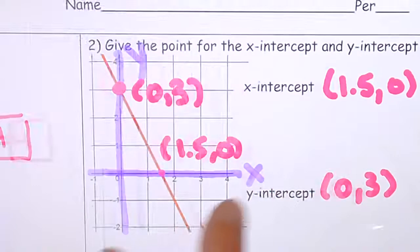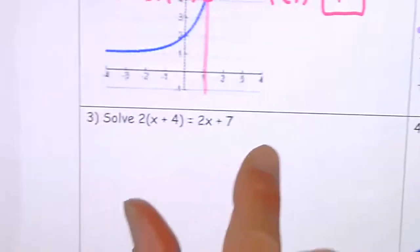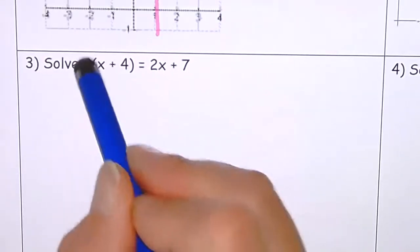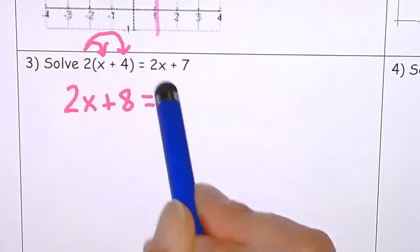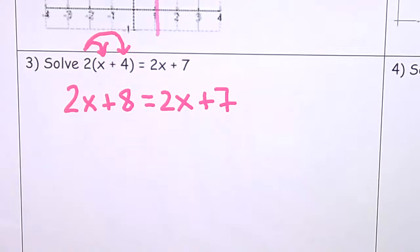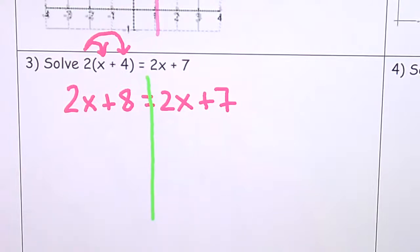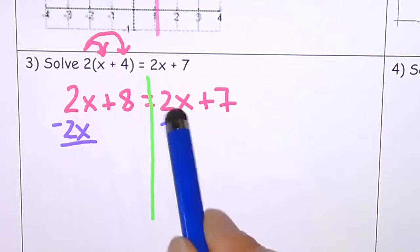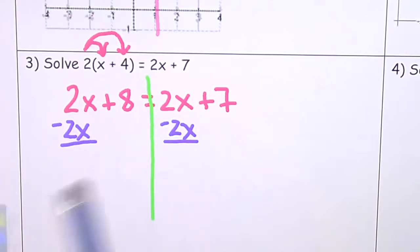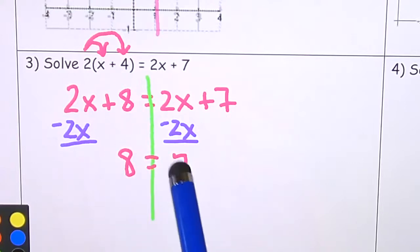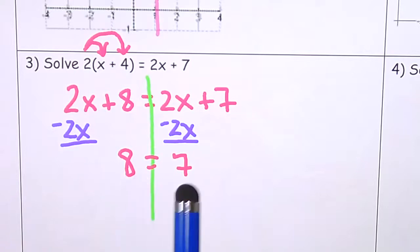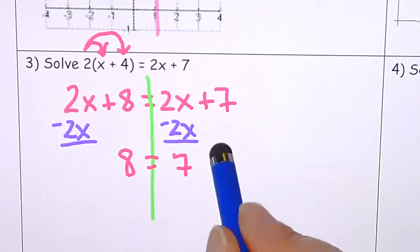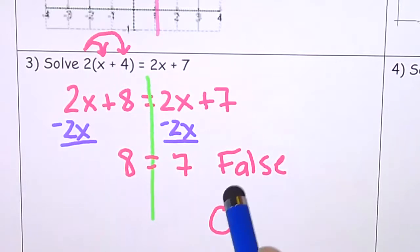On number three, we're solving for x. I would distribute the 2 to get 2x plus 8 equals 2x plus 7. Notice we have 2x on both sides — when I subtract 2x from both sides they cancel out and I'm left with 8 equals 7. Always check what you get when your x's cancel. 8 equals 7 is false, so the answer is no solution.